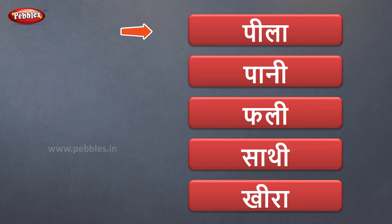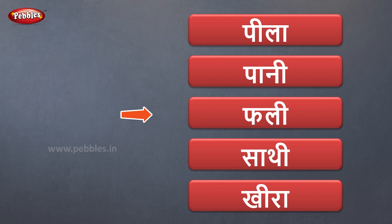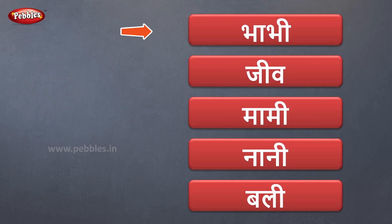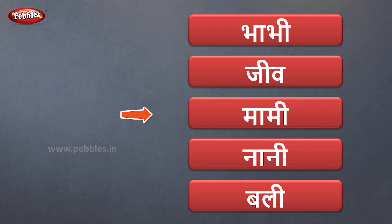चलिए दोस्तों, ये सारे शब एक बार फिर से सीखते हैं. पीला, पानी, फली, साथी, खीरा, भावी, जीव, मा... मी... मामी, ना... नी... नानी, ब ली... बली.